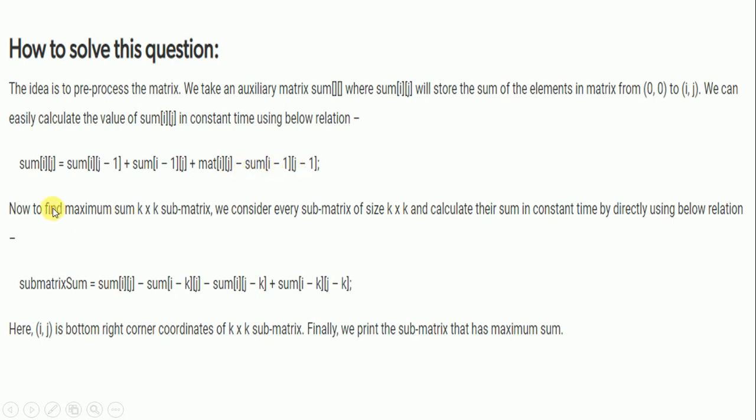Now to find the maximum sum k×k submatrix, we consider every submatrix of size k×k and calculate their sum in constant time by directly using the below relation: submatrixSum = sum[i][j]